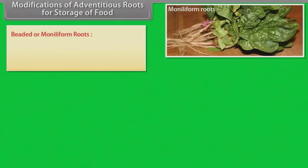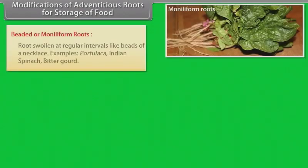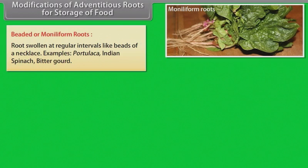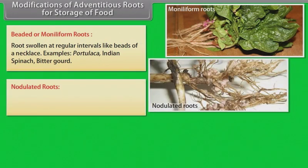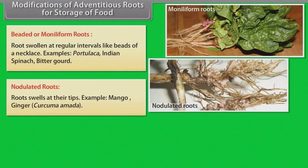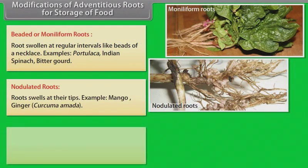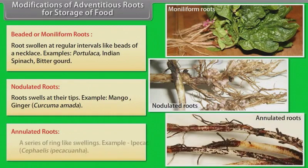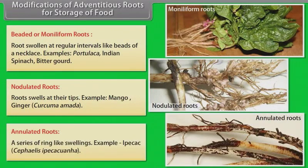Beaded or moniliform roots — roots swollen at regular intervals like beads of a necklace. Examples: Portulaca, Indian spinach, bitter gourd. Nodulated roots — roots that swell at their tips. Examples: mango ginger. Annulated roots — a series of ring-like swellings. Example: Ipecac.